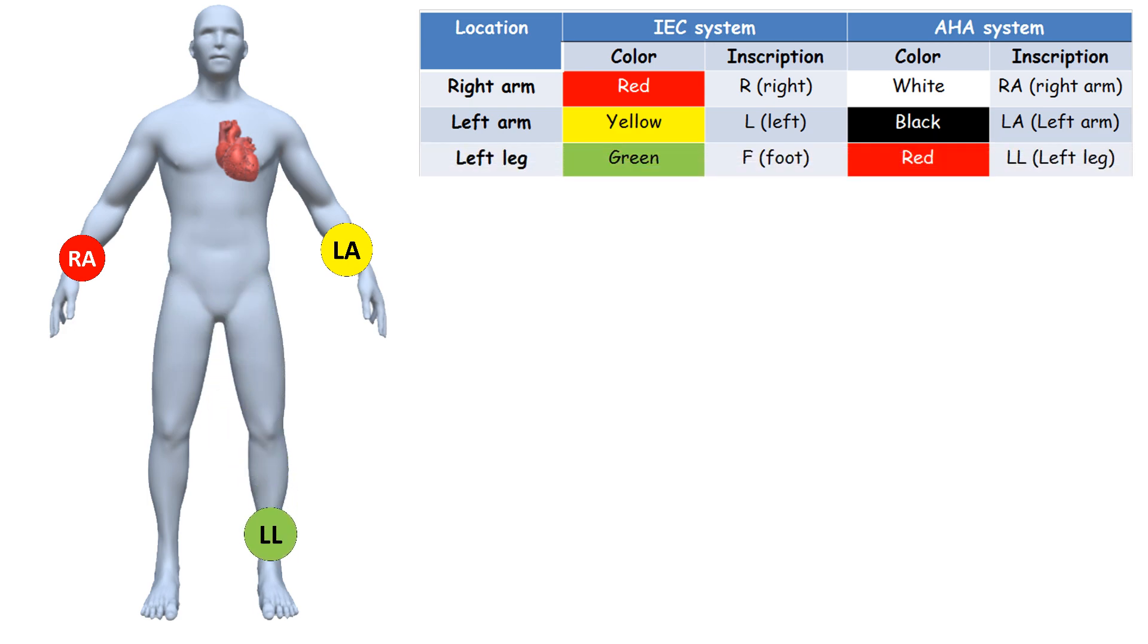LL, often marked in green color, is placed on the left leg on the lower end of the inner aspect of the calf muscle. RL, often marked in black color, is placed on the right leg in the same place as LL.